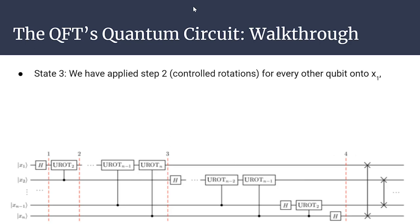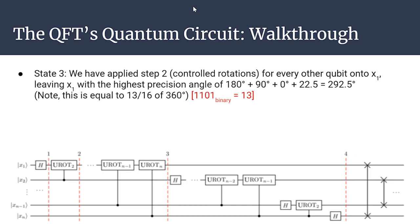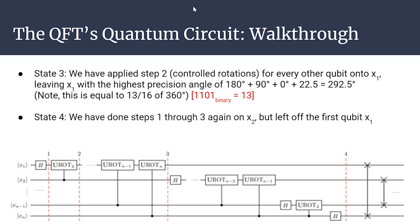At step 3, we repeat step 2 controlled by every other qubit. For x = 13: x1 gets 180° + 90° from before, plus 0° from x3 (which is 0), plus 22.5° from x4 (which is 1). Adding them up gives 13/16 of a full rotation — exactly what we expect since we started with 13 in binary. In step 4, we repeat the same process but for x2. Note that no gates are controlled by x1 this time — that's the decreasing precision characteristic of the QFT.